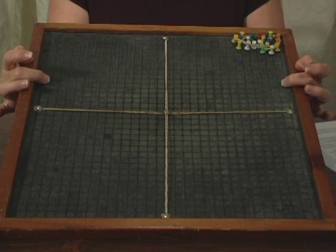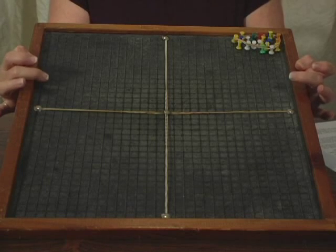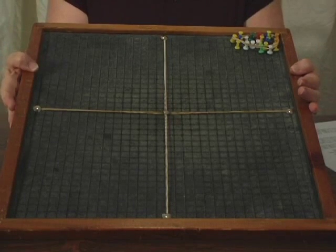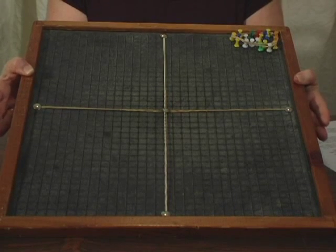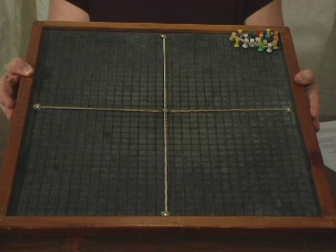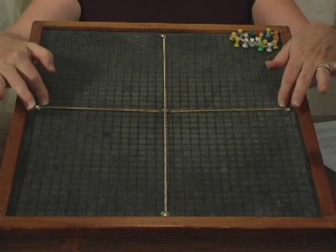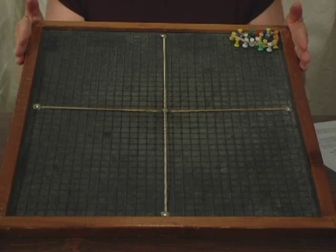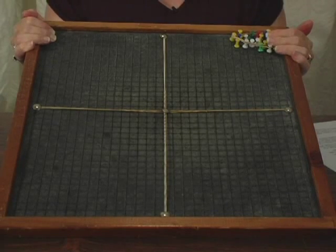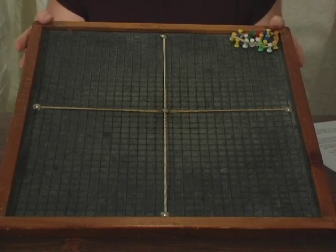And it's also self-correcting. They can figure out if they've made a mistake. Again, I've just shown you three different versions of the graph board. If you have any of these, it's still the Graphic Aid for Mathematics, which again, I'm going to call the graph board.